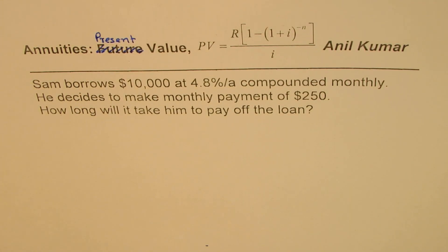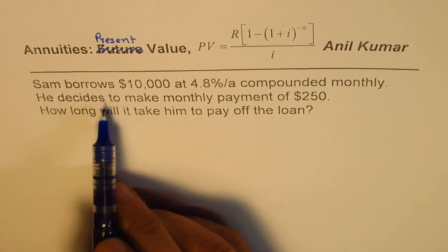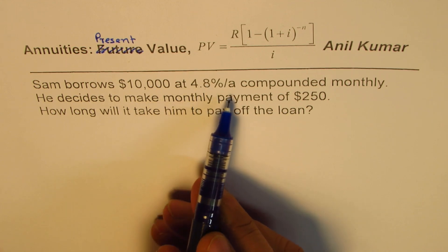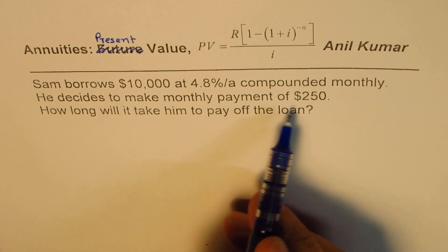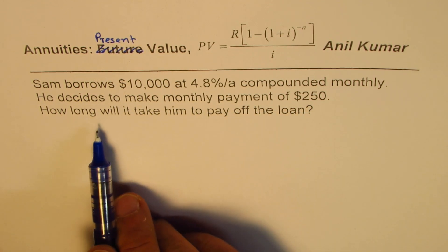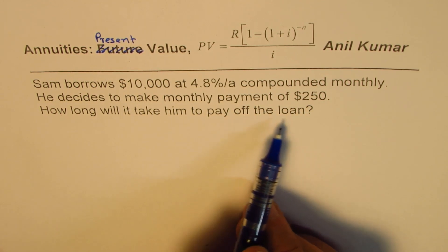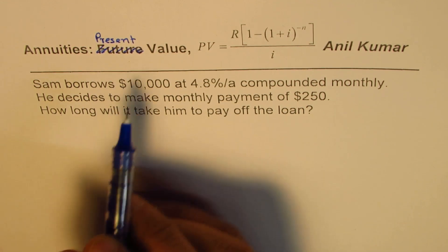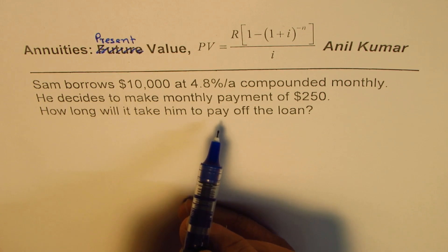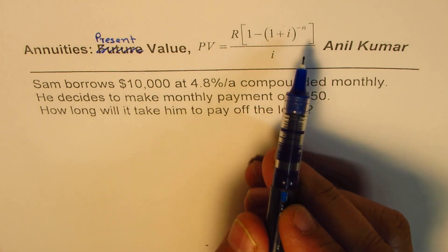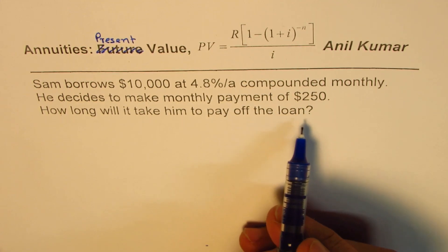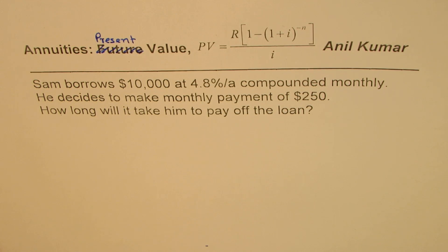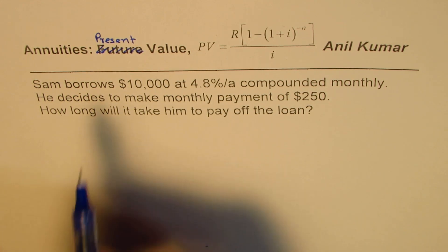I'm Anil Kumar. Here is another very interesting question on annuities — present value. Sam borrows ten thousand dollars at four point eight percent per annum compounded monthly. He decides to make monthly payments of $250. How long will it take him to pay off the loan? We need to find the duration in years and months. You can pause the video, answer the question, and then look into my suggestions.